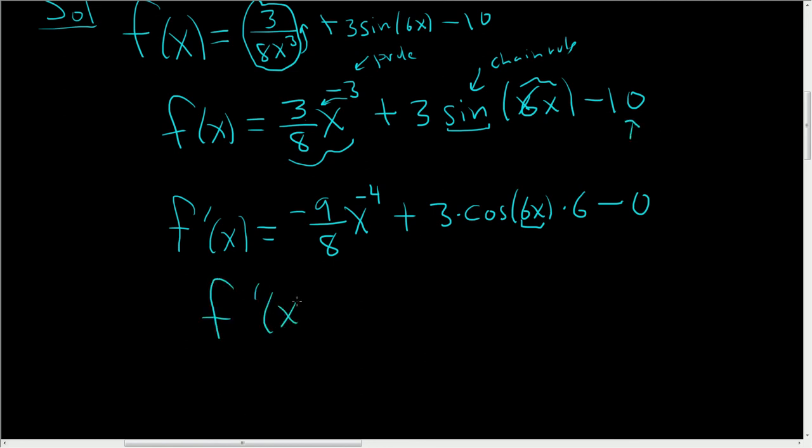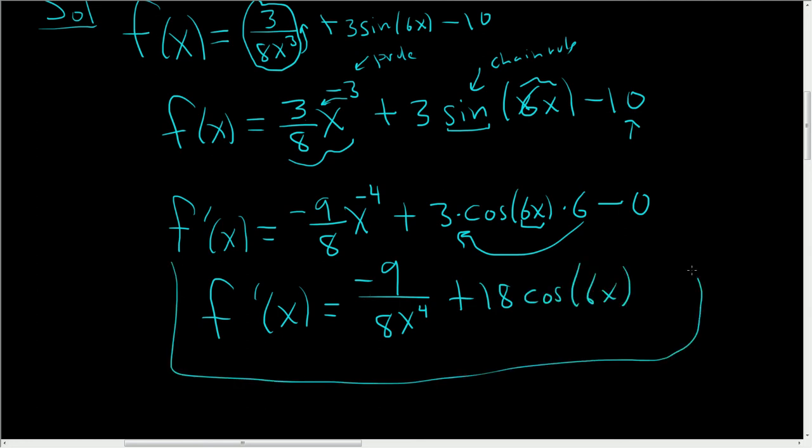Let's just clean this up. This is negative 9 over 8 x to the 4th. 6 times 3 is 18, so 18 cosine 6x. That's it, just a quick video on how to find a derivative. This one was a little bit harder.